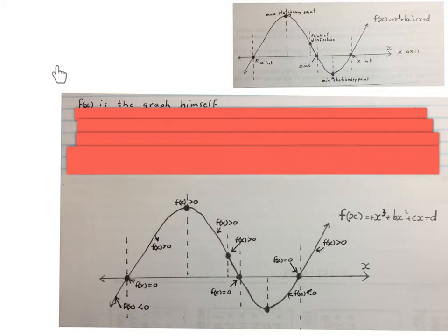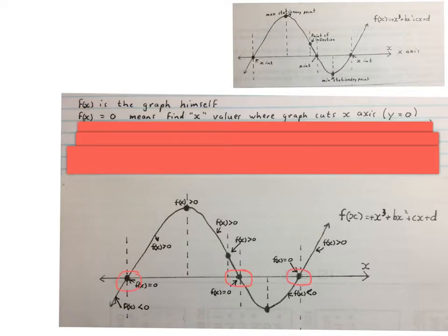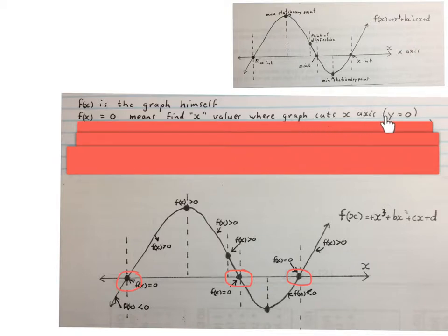First notation: f(x) is the graph itself. If you see the question f(x) equals zero, it means find the x values where the graph cuts the x-axis, where y equals zero. That's inside those three red circles.